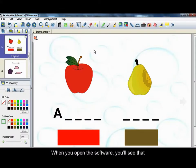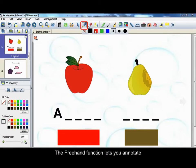When you open the software, you will see that the annotation features are listed in the toolbar. The freehand function lets you annotate in different colors and thicknesses.